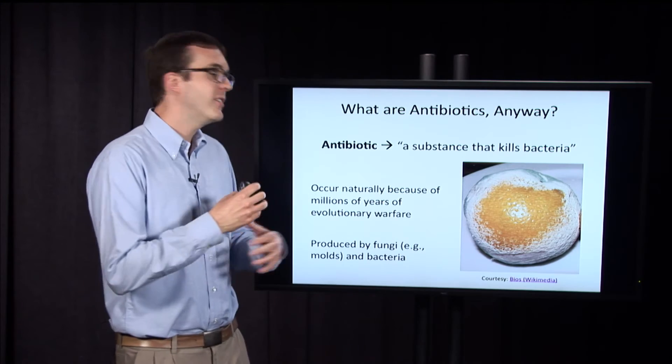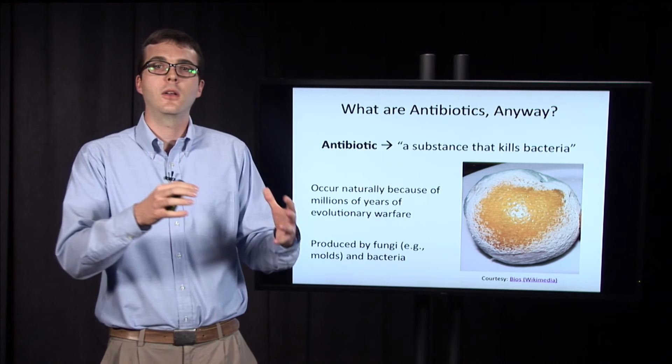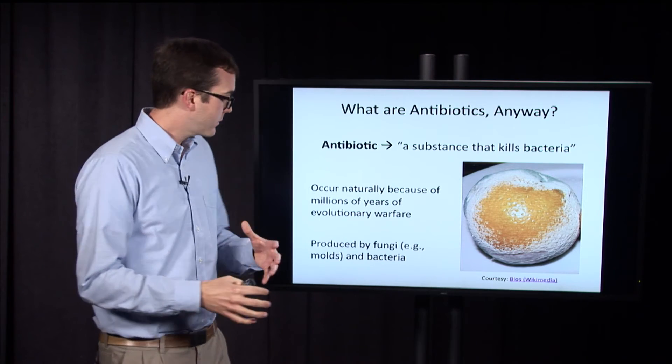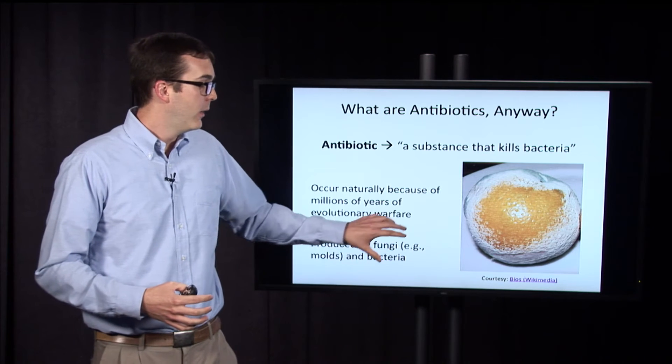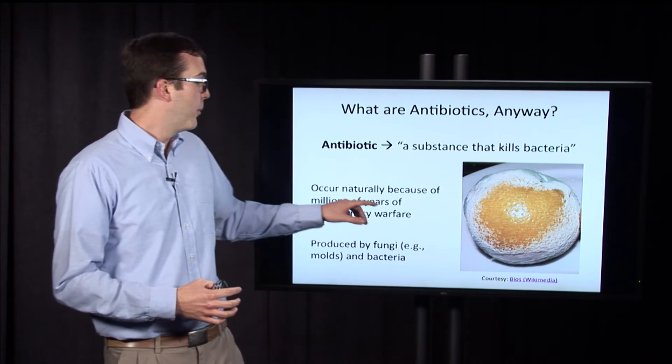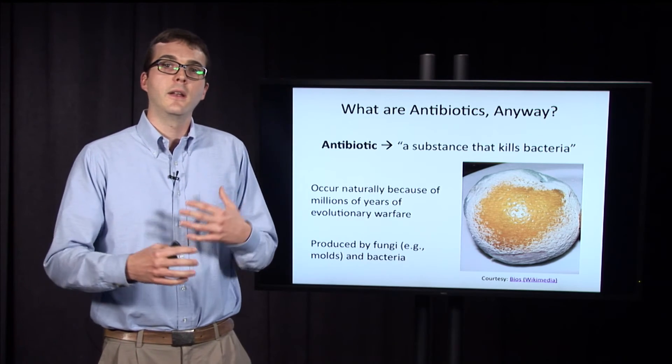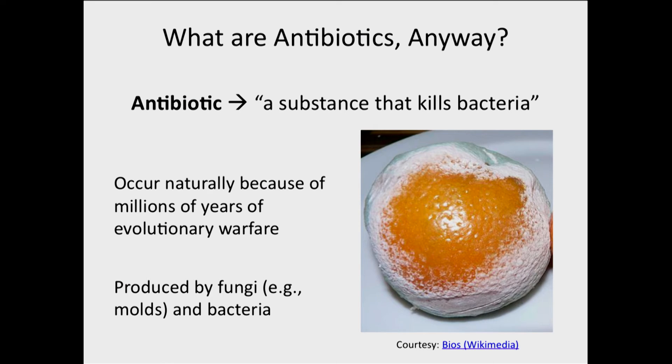Let's define what antibiotic really means. I'm using it loosely as a substance that goes in and kills bacteria. Where do these come from? Well, they occur naturally. Just like the penicillium mold that Alexander Fleming discovered, a mold is a type of fungus, and fungi have evolved over time to have these antibiotics so that they can kill bacteria. They're also produced by other bacteria in order to kill bacteria.